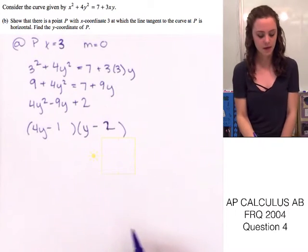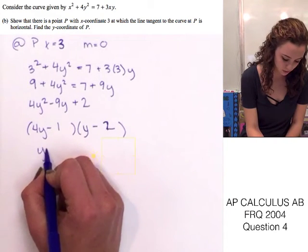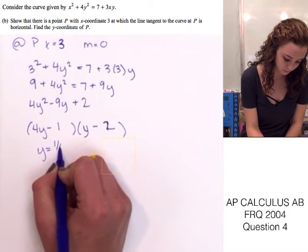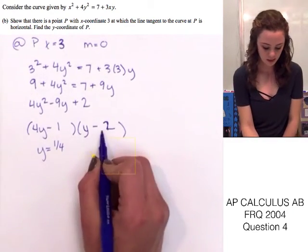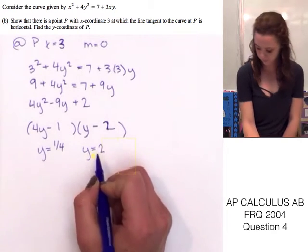So, from there we can find the values of y. This one will be y equals 1 fourth, because we'll set this equal to 0 and find 1 fourth. And when we set that equal to 0, we get y equals 2.